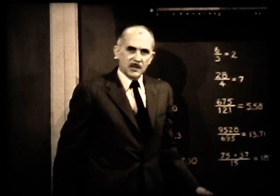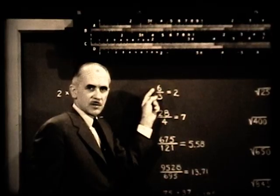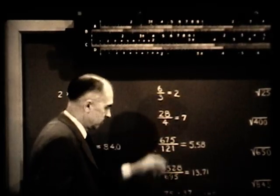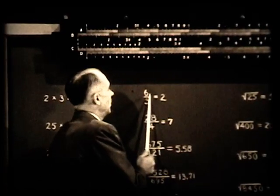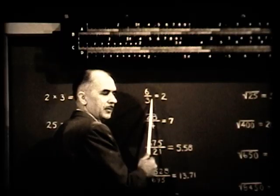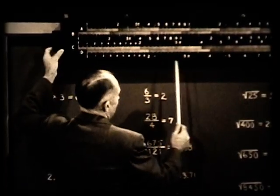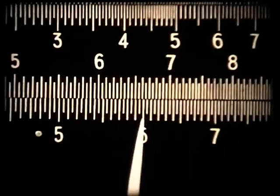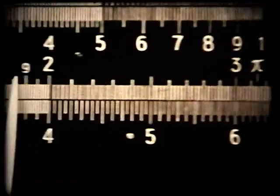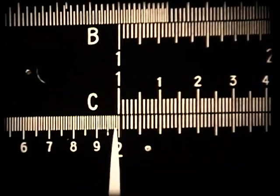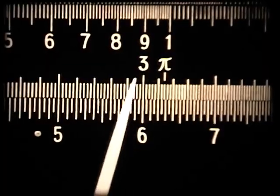Now let's carry out division processes. Here again we use the lower scales. For a simple example, let's take 6 divided by 3 equals 2. This is the reverse process of multiplication — you set the two numbers on your C and D scales. You find 6, the numerator, on the D scale, then bring the denominator 3 opposite it on the C scale, and over on the index you find 2. Because 2 times 3 is 6, so 6 divided by 3 is 2.